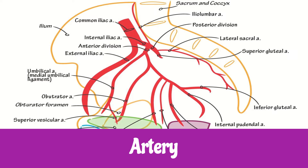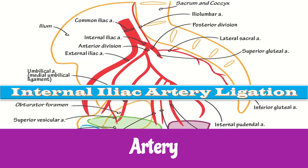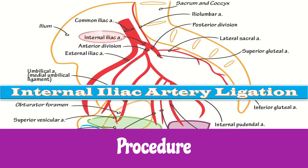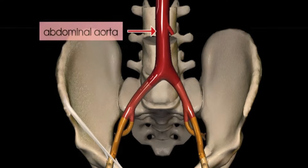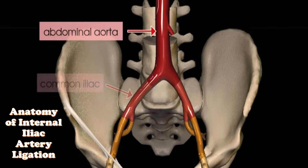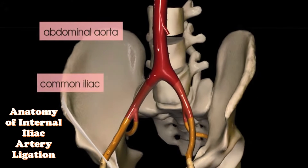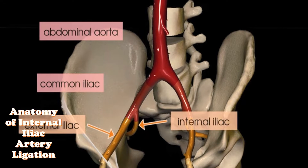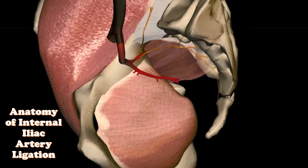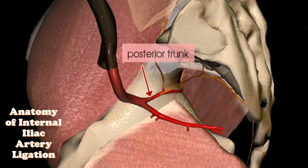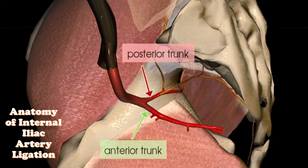Today we will talk about internal iliac artery ligation, which is a fertility-preserving procedure in women experiencing postpartum hemorrhage. The abdominal aorta divides into two common iliac arteries at the level between L5 and S1 vertebra. The common iliac artery divides into external and internal iliac arteries, and the internal iliac artery further divides into two trunks: anterior and posterior.